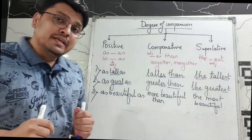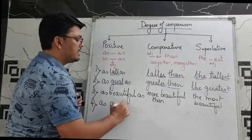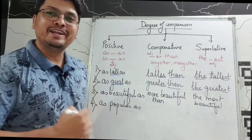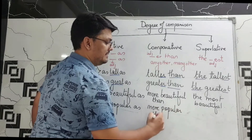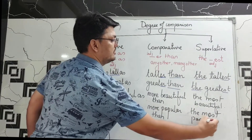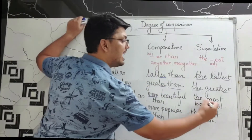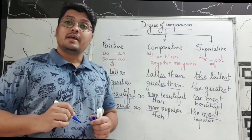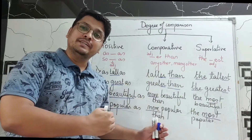Let's take one more example. 'As popular as' — here also 'popular' is a two-or-more-syllable adjective, so 'popular' will turn into 'more popular than' in comparative degree and 'the most popular' in superlative. You can see how 'as popular as' turns into 'more popular' and 'the most popular.'